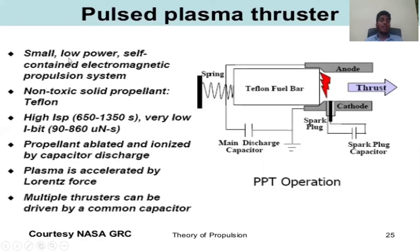Plasma thrusters (PPT): small, low-power, self-contained electromagnetic propulsion system using non-toxic solid Teflon propellant. High Isp of 50–1350 seconds, very low impulse bit of ~80 μN·s, propellant ablated and energized by capacitor discharge, plasma accelerated by Lorentz force, and multiple thrusters can be driven by a common capacitor. Components: spring, Teflon fuel bar, anode, thrust, cathode spark plug, and discharge capacitor.